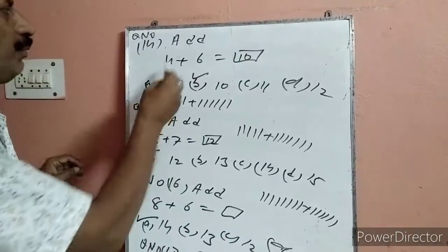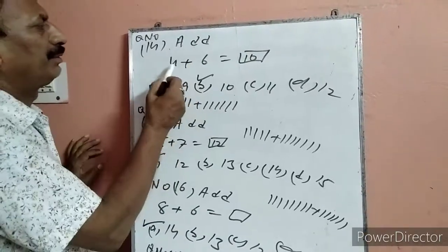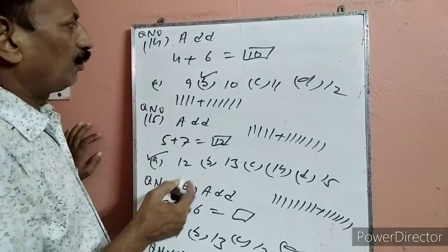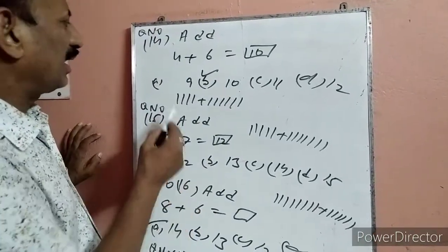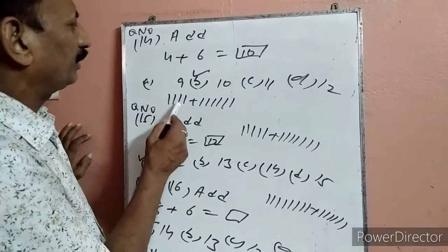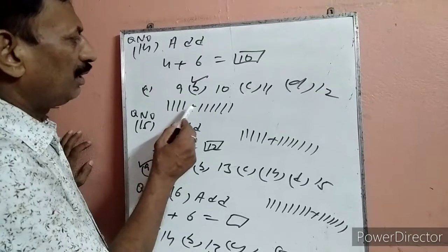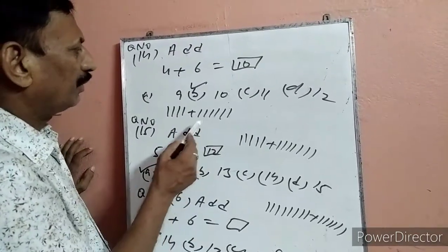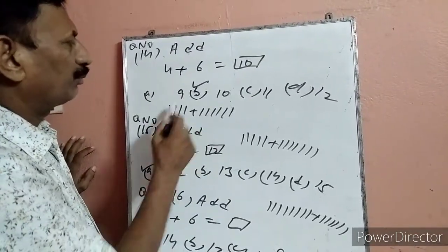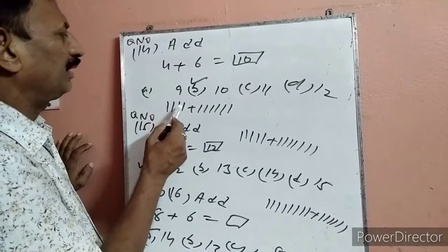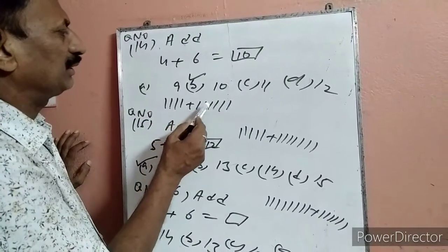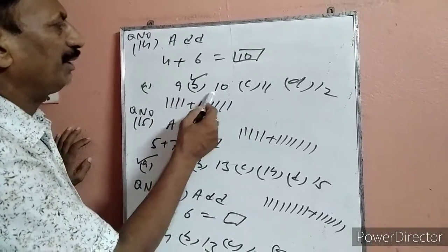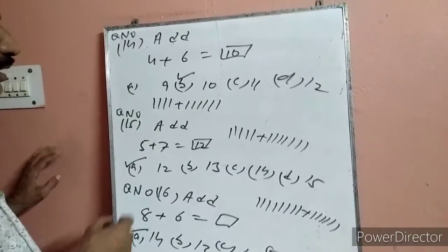Question 14: Add 4 plus 6. 4 में 6 add करेंगे: 1, 2, 3, 4 फिर 1, 2, 3, 4, 5, 6. सबको count किया: 1, 2, 3, 4, 5, 6, 7, 8, 9, 10. 10 कहां पर है — B पर. B पर हमने टिक लगा दिया.